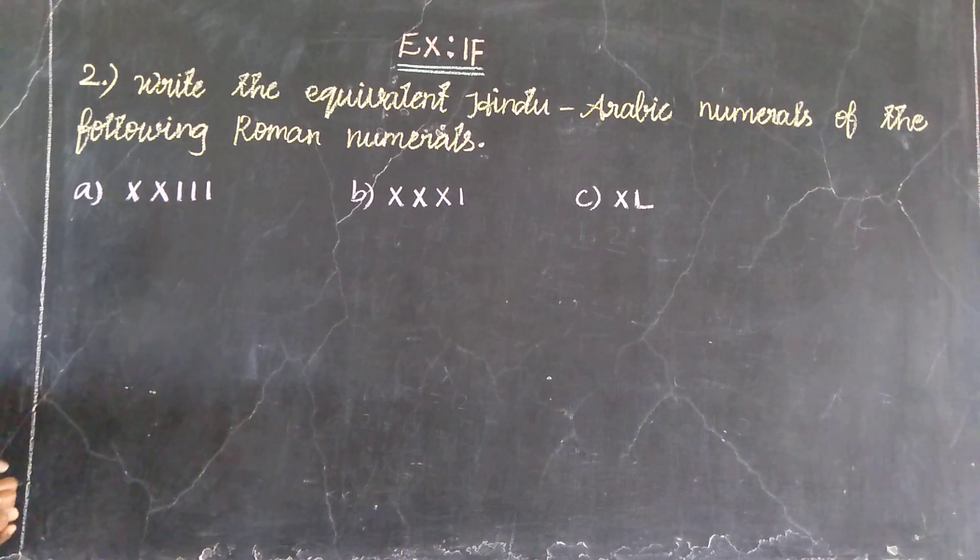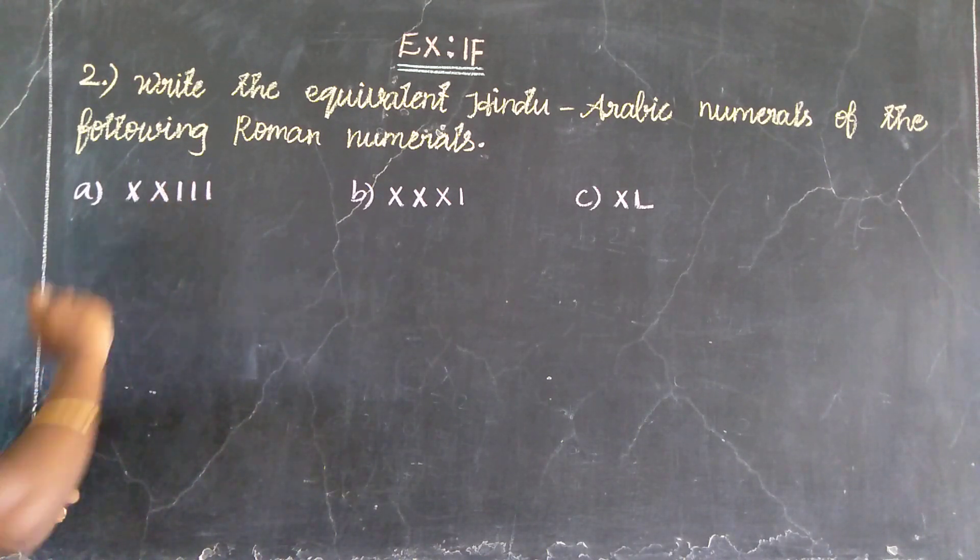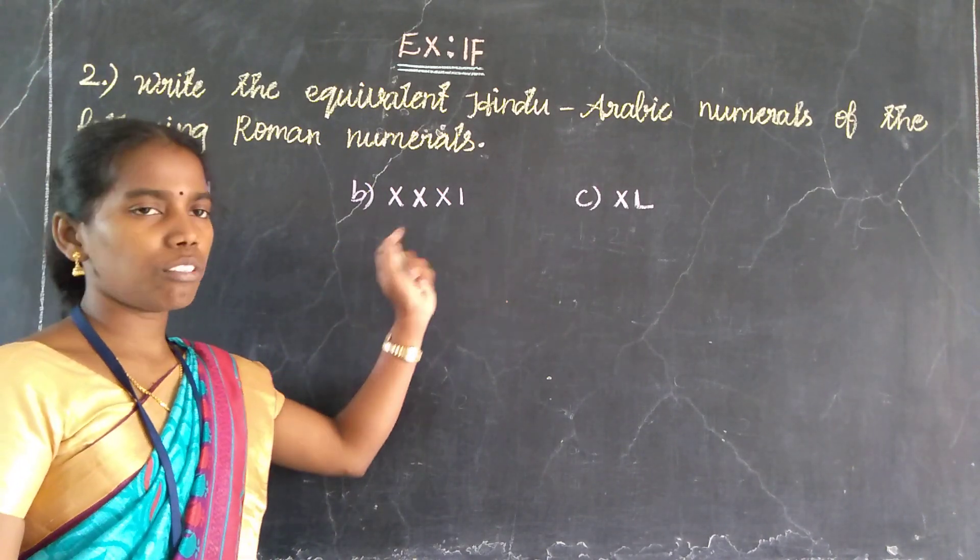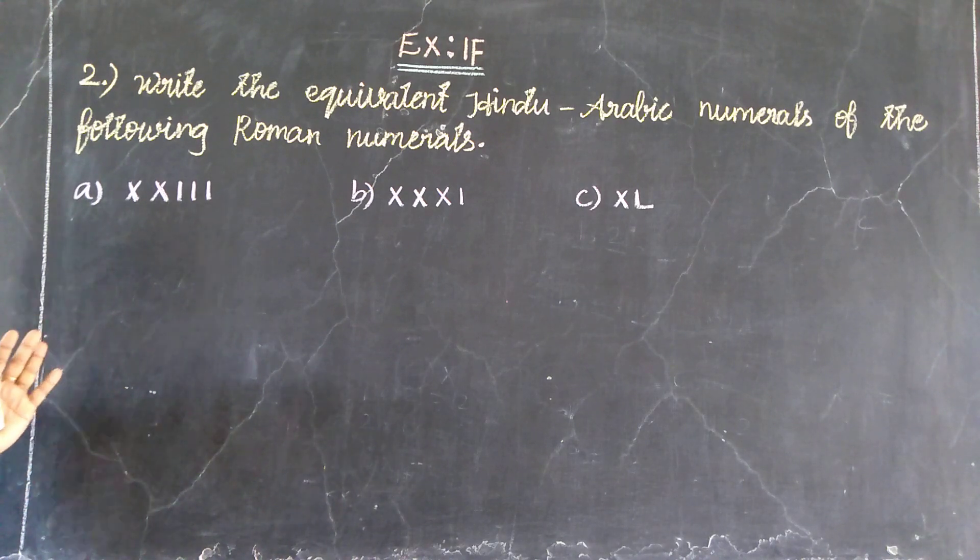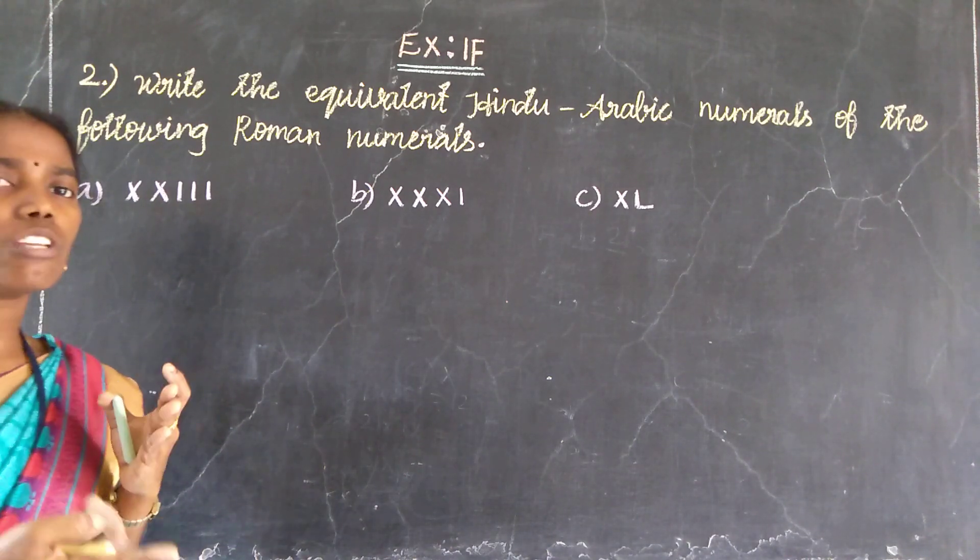See, in this numbers: X, X and I, I, I. Then second one, X, X and I. Third one, X, L. So maximum of the, in symbols, X and I, L. So in the three symbols, I use the Roman symbols. In the three symbols, value first find out.